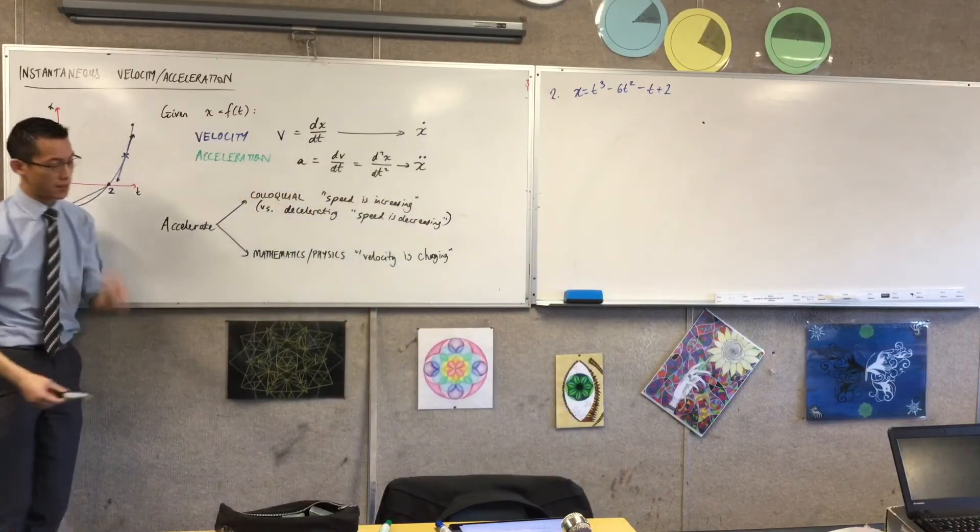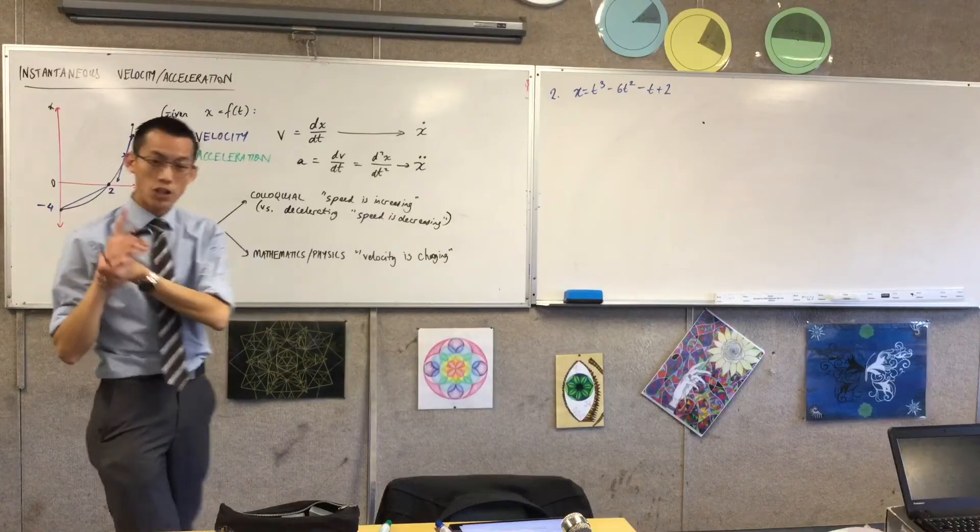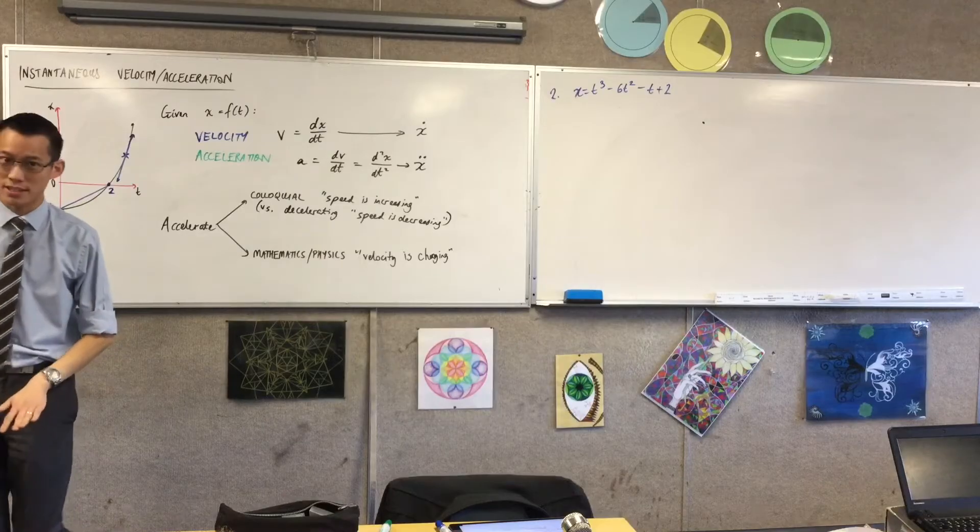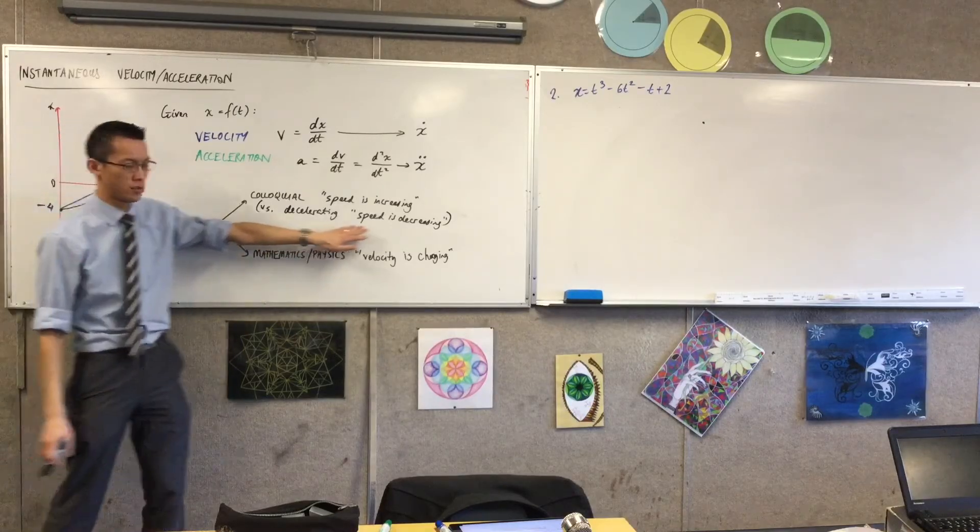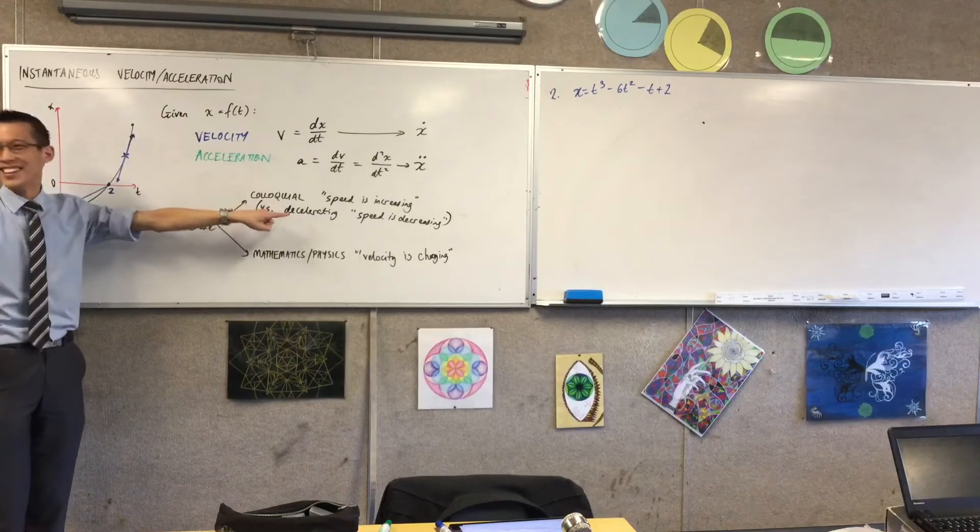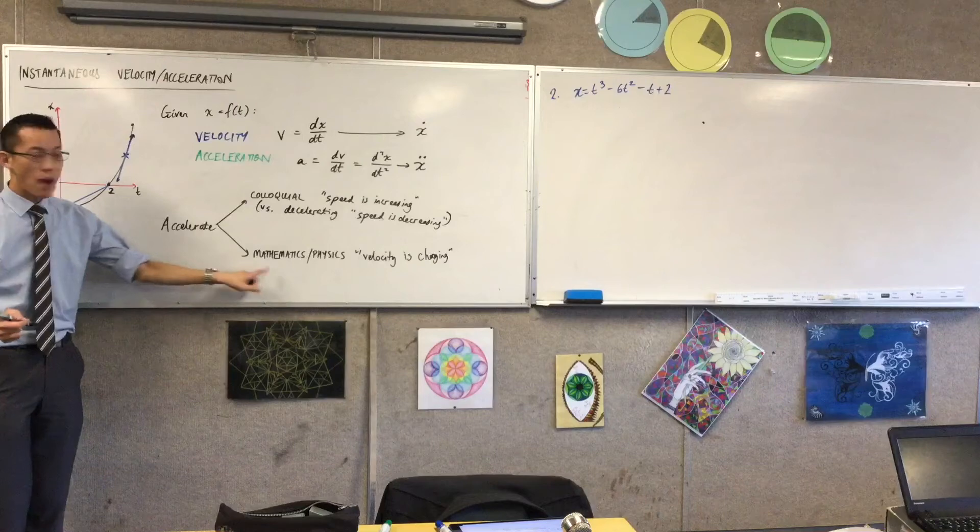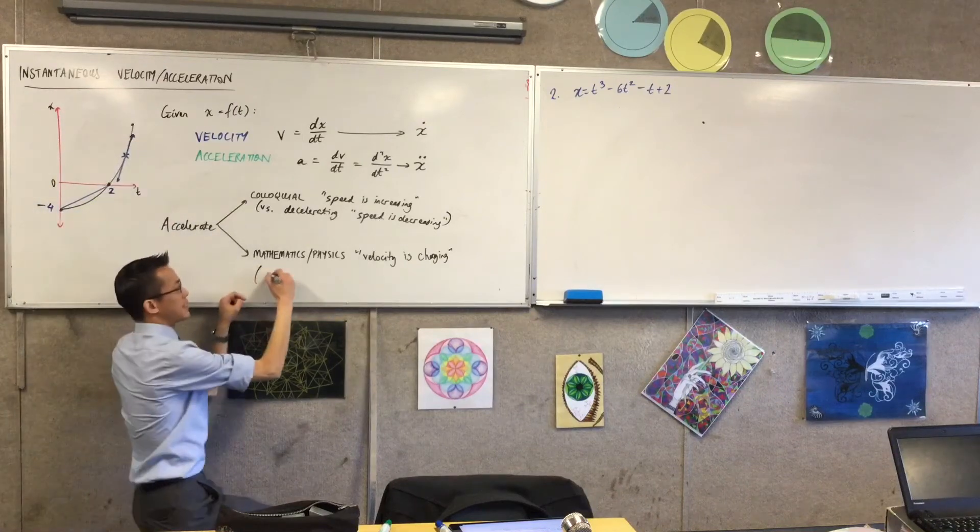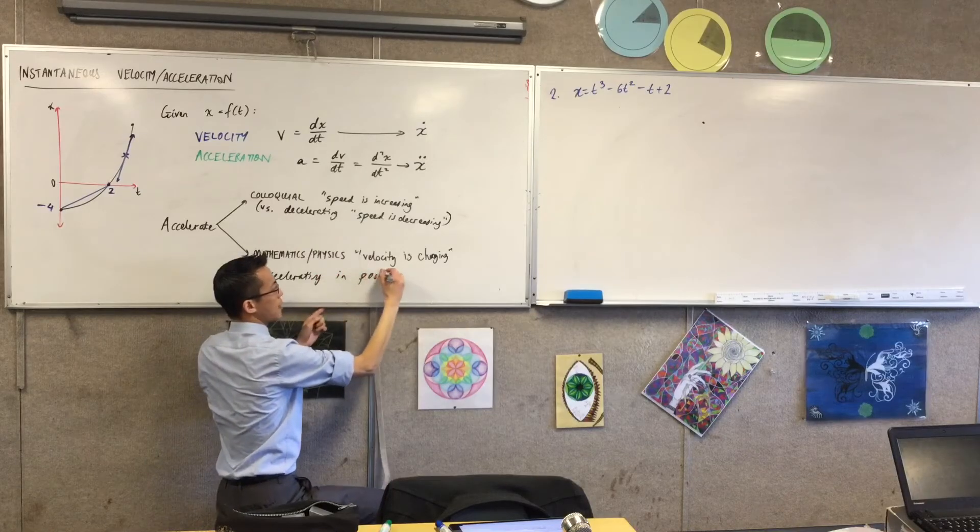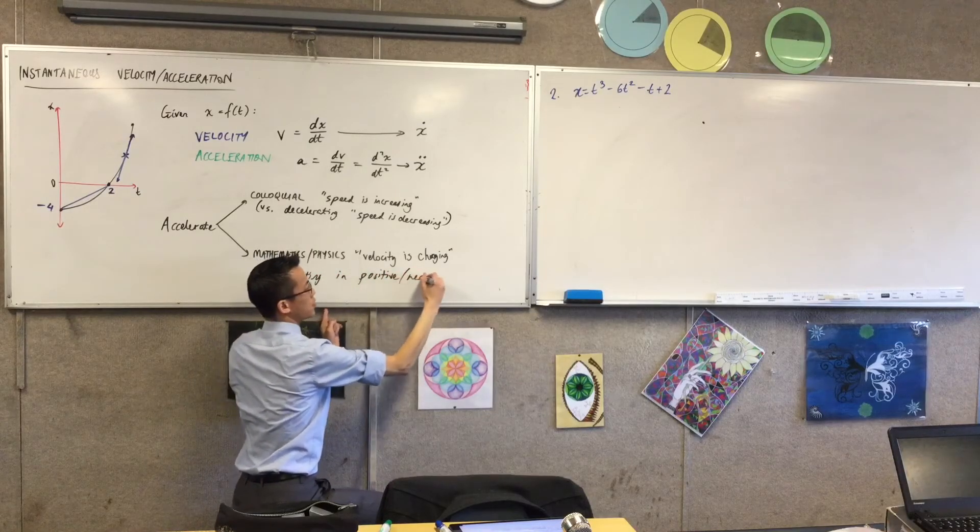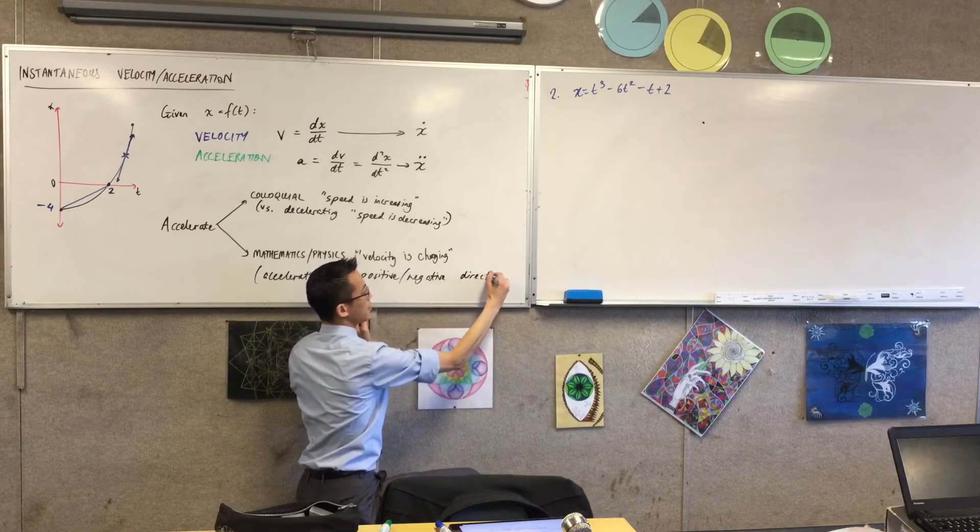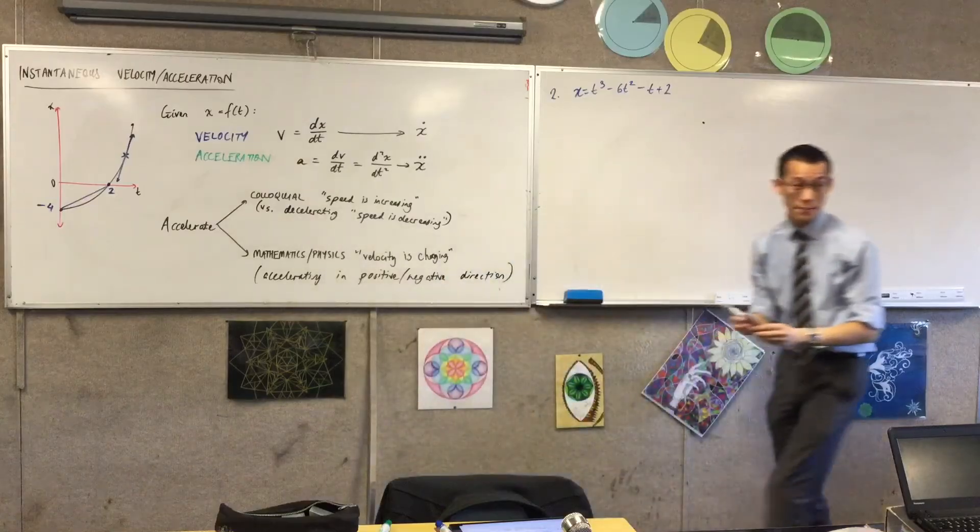So velocity is changing, which means that really, rather than saying accelerating, decelerating, which you should, by the way, never use the word decelerating. It's just too confusing and it has this colloquial meaning attached to it. It's not worth it. So you'll never hear me, except for this moment here, talk about decelerating in this context. Rather than that, I would say I am accelerating in a positive or a negative direction. And in the context of the question, that might mean I'm accelerating up or down, I'm accelerating left or right, or whatever you want to define.